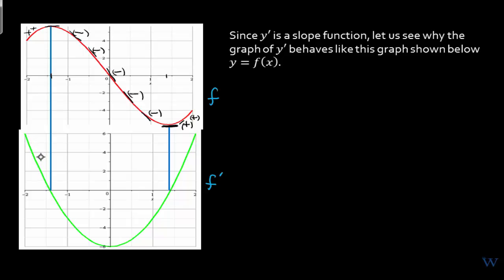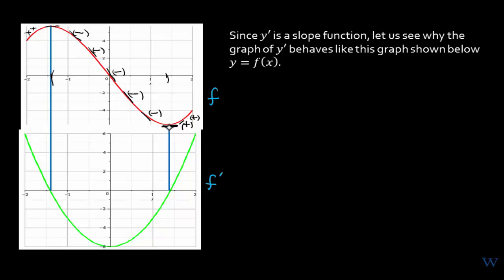All the values are positive, corresponding to the positive slopes. Then we hit a zero right at this point and the green curve changes direction, having negative values because the slopes are negative. The green curve is now below the x-axis — all negative — until we hit a zero again, because this corresponds to a zero slope of the line tangent to the curve.